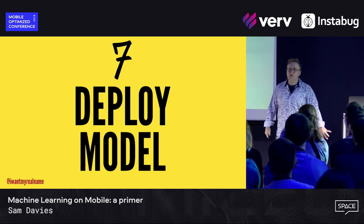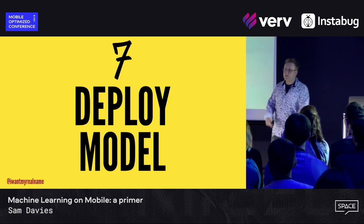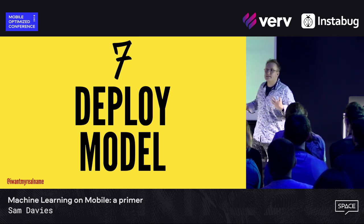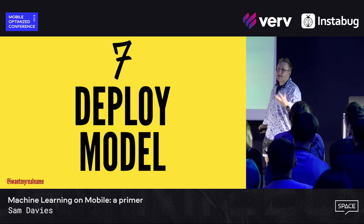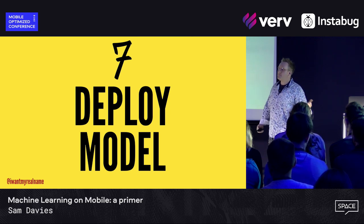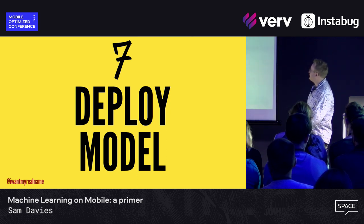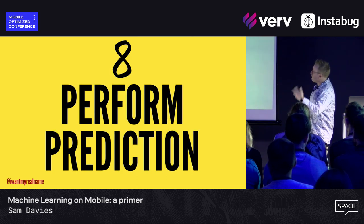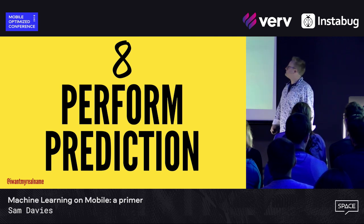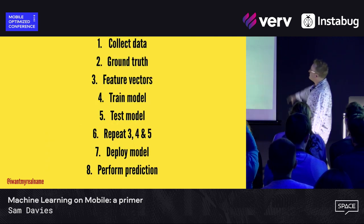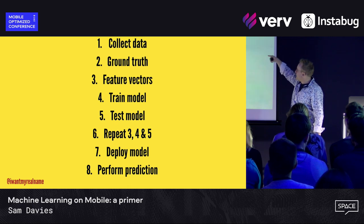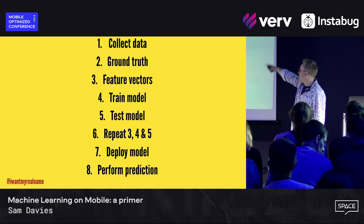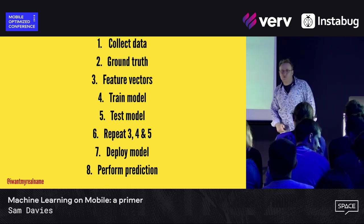Then you deploy your model — I've now got my model, I'm going to put it out in the real world and I can start using it. I can start getting information from the data that I've collected using this model. And with that, you perform prediction. So these are the eight steps: collect data, ground truth, feature vectors, train model, test model, repeat round and round, deploy the model, and perform the prediction.